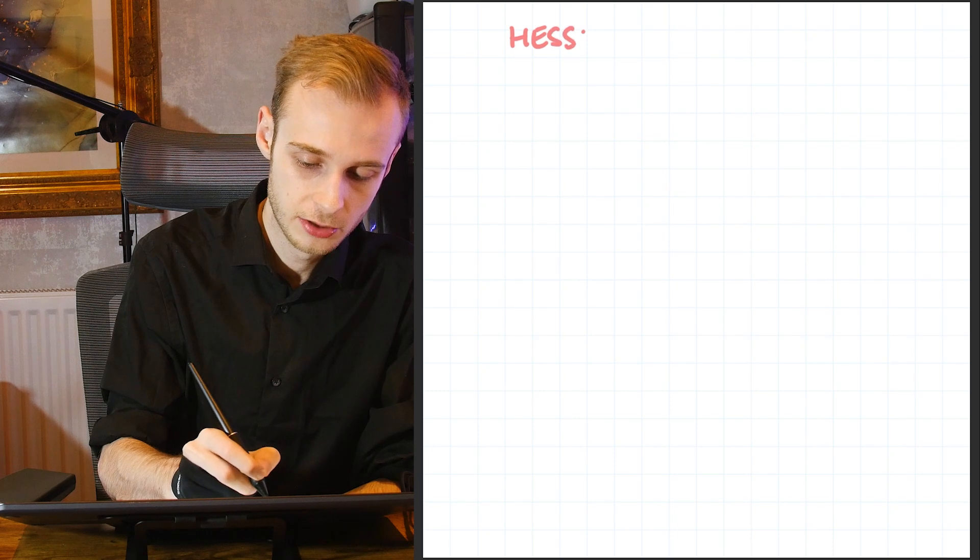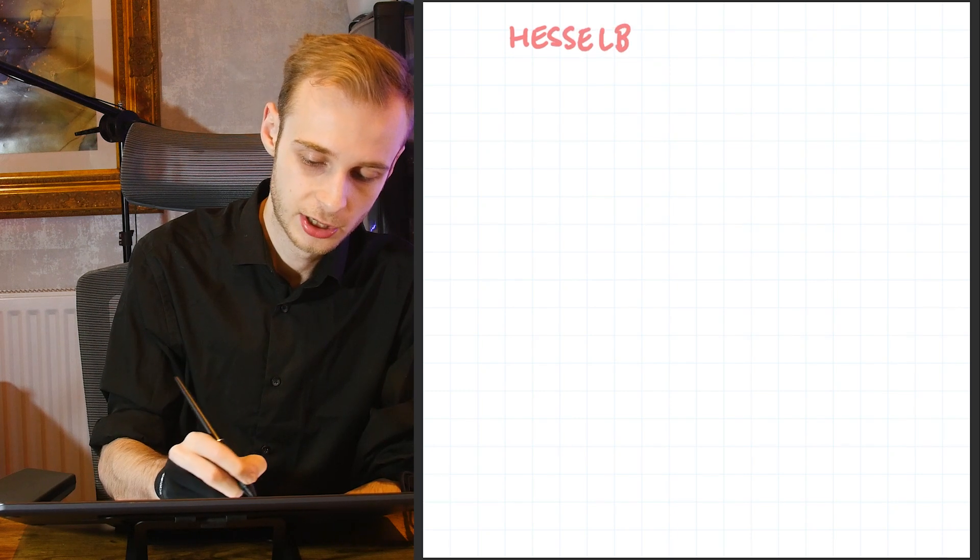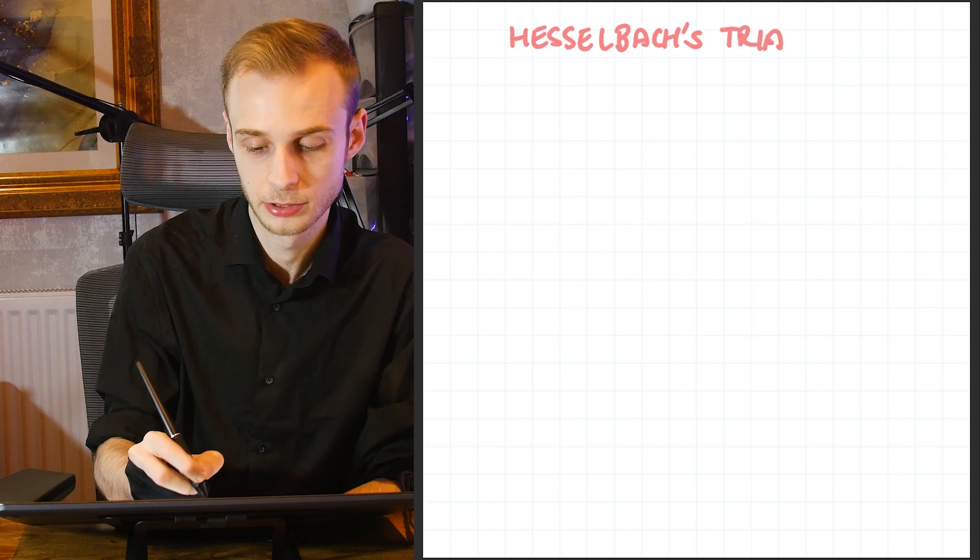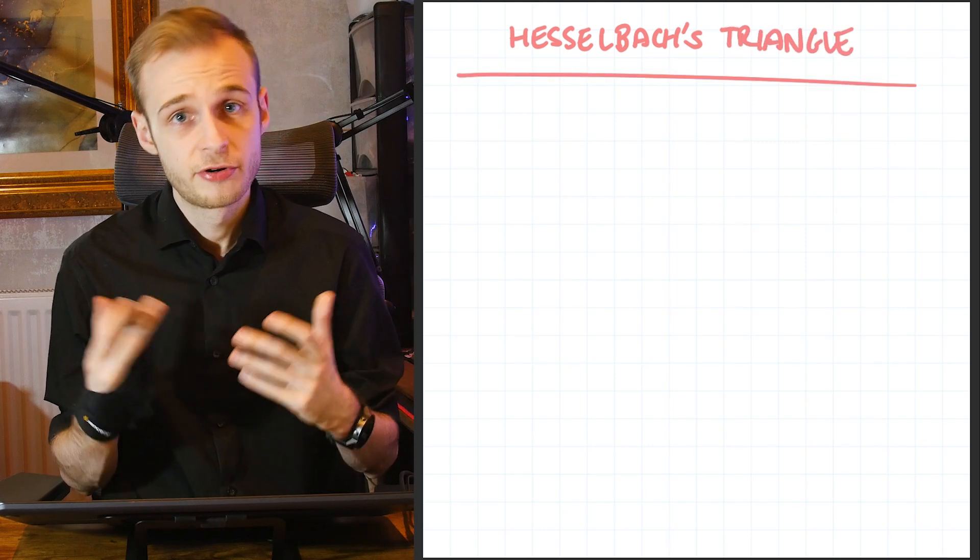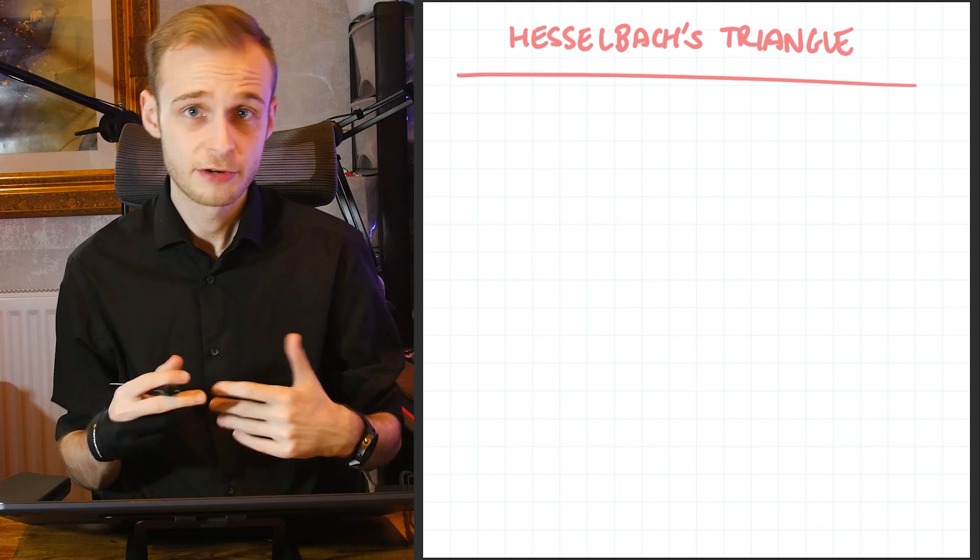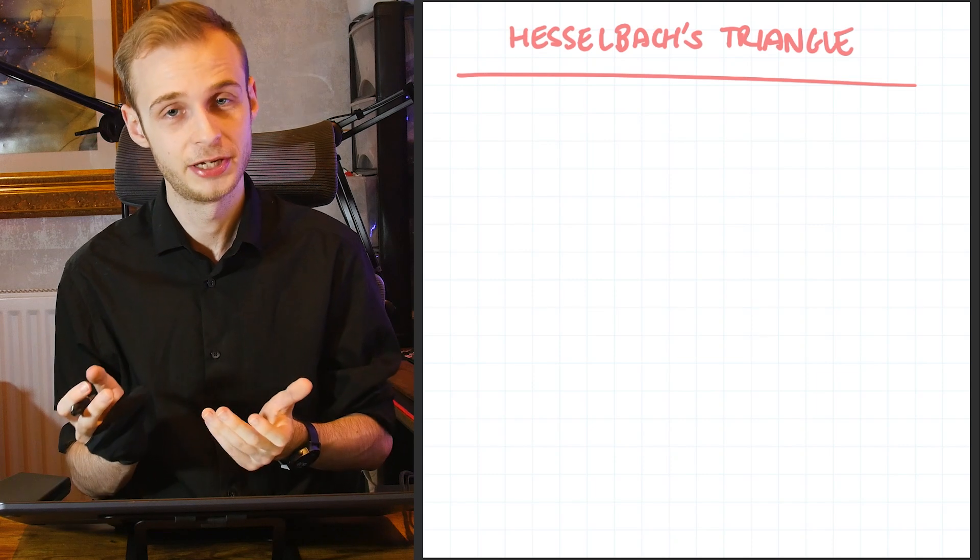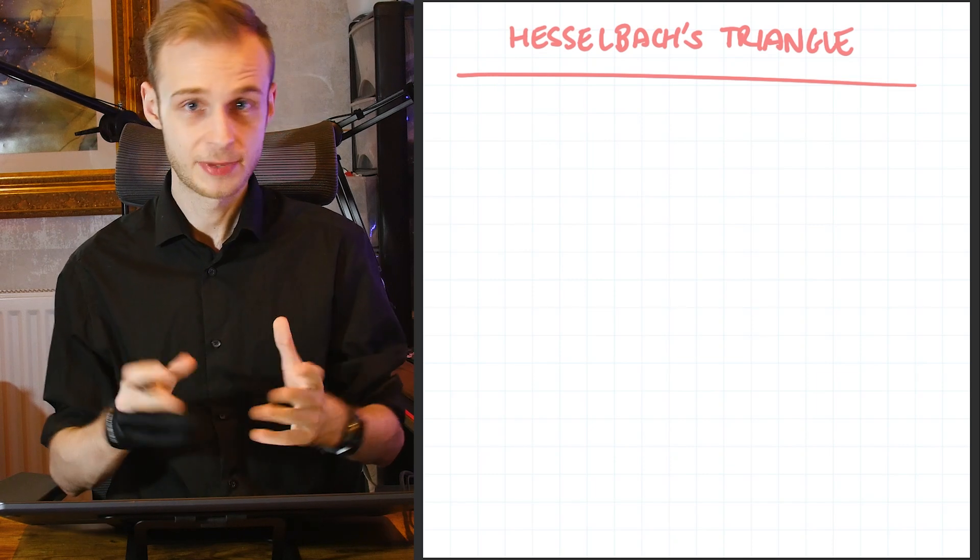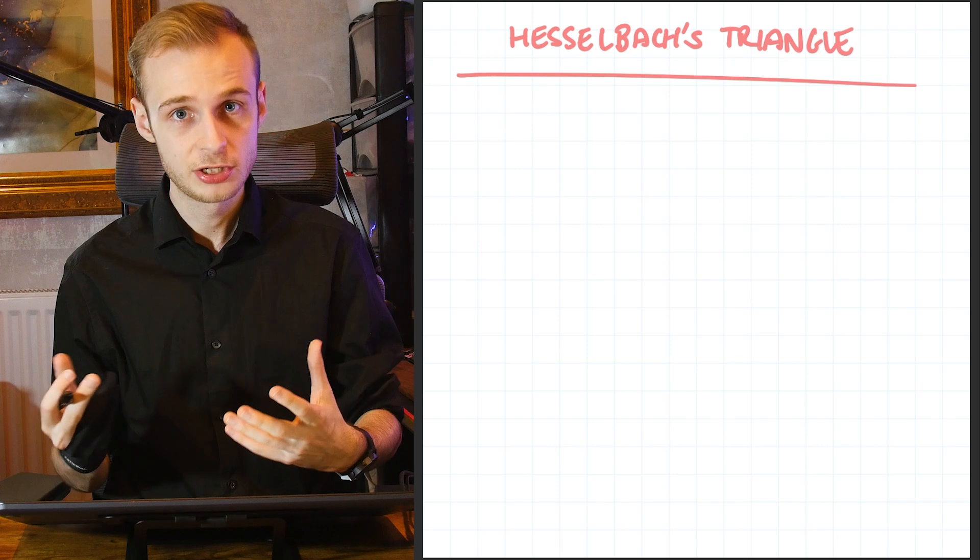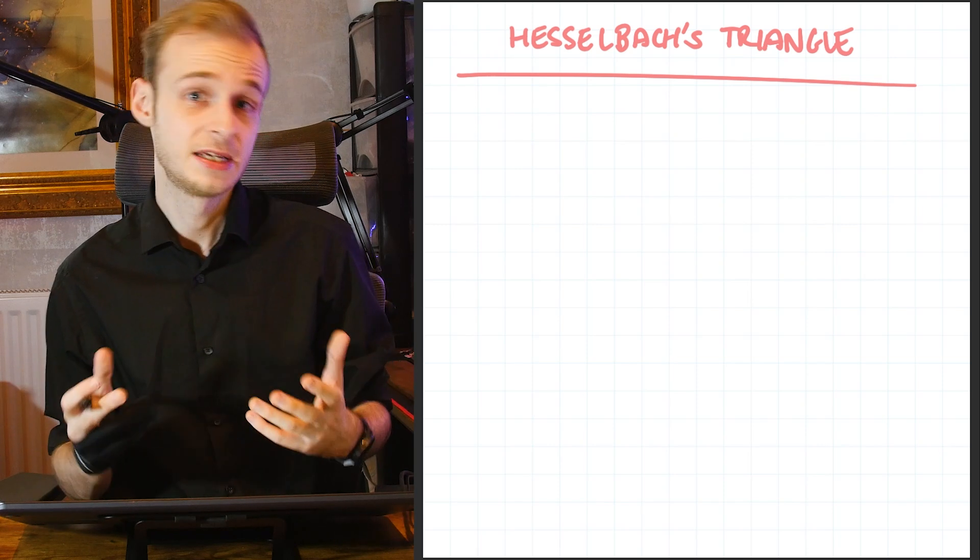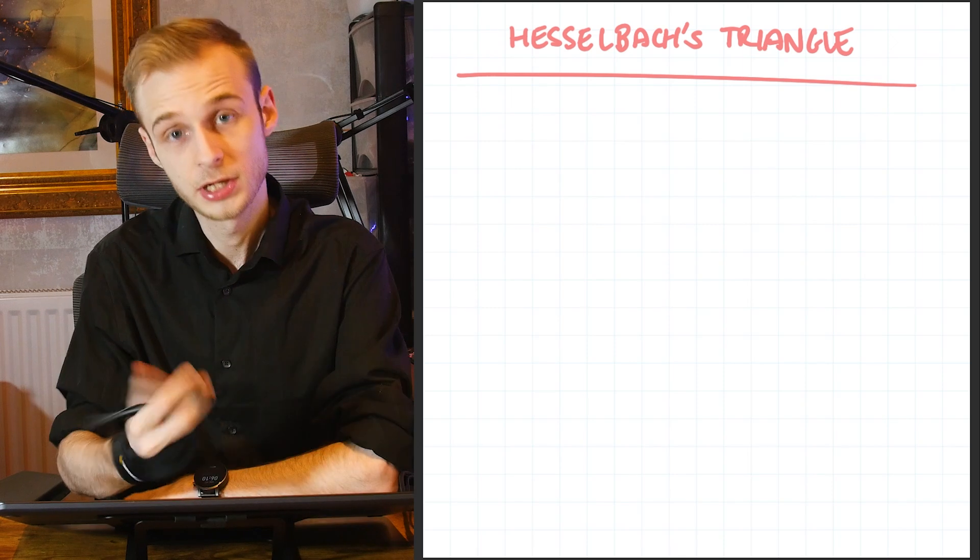Now that means it is time to move on to Hesselbach's triangle or, as it's sometimes known, the inguinal triangle. The reason why this area is important anatomically is that in the case of a direct inguinal hernia, Hesselbach's triangle is the space into which or through which a direct inguinal hernia will protrude. You can think of it like a relative area of weakness in the abdominal wall.